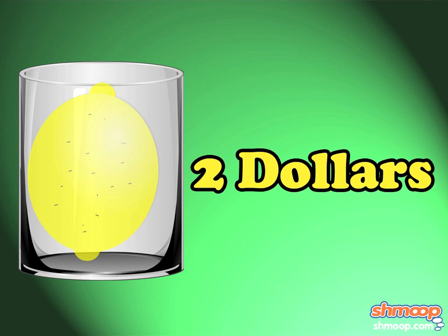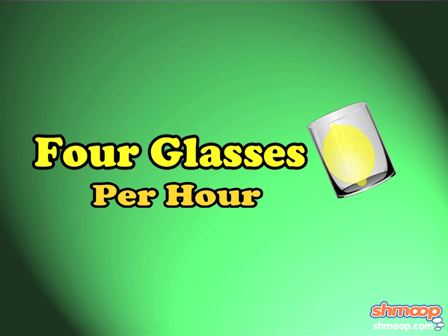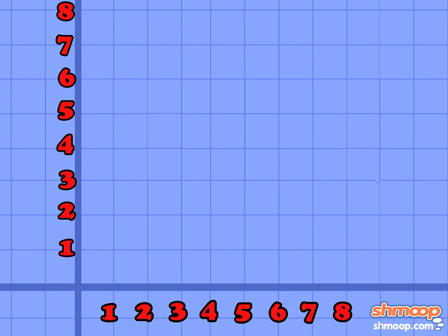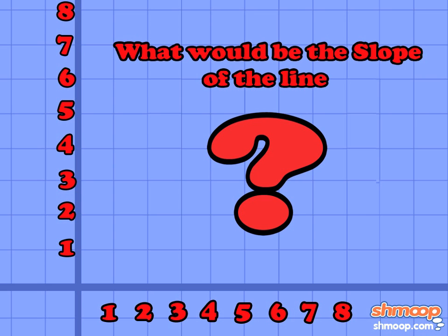Marvin sells his glass-o-lemons at $2 per glass, and sells four glasses per hour. If we plotted the money Marvin earns for every hour that his lemonade stand is open, what would be the slope of the line?